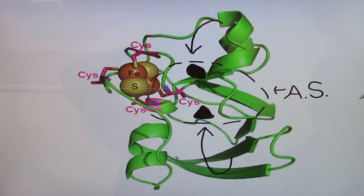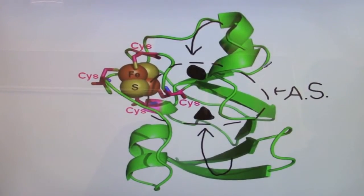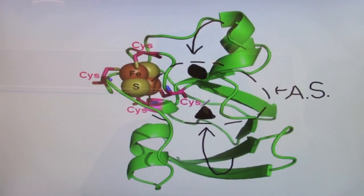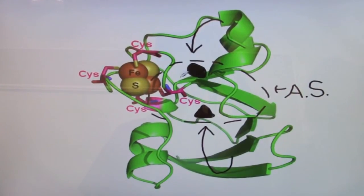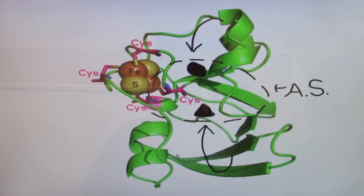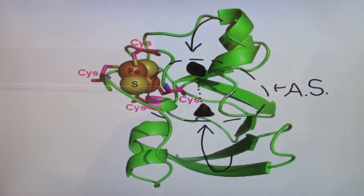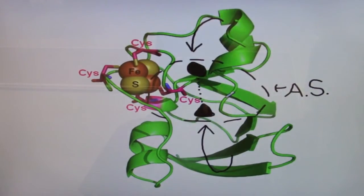This conformational change decreases the distance between the FAD cofactor and NADP+, enabling the two cofactors to bind to one another by the formation of a hydrogen bond. This hydrogen bond is specifically between a glutamate residue and a serine residue.